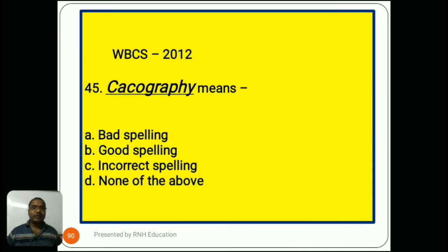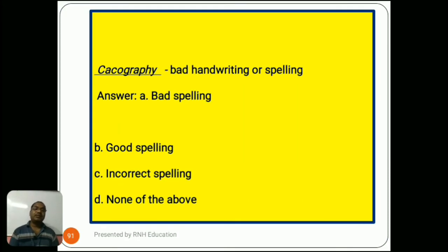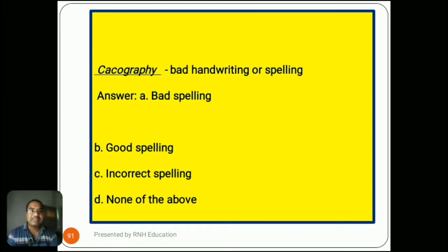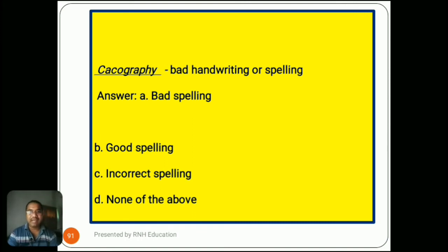Question number 45, from 2012: 'Cacography means...' Options are A) bad spelling, B) good spelling, C) incorrect spelling, D) none of the above. Cacography means bad handwriting or spelling. The answer is A) bad spelling. Option B is good spelling, Option C is incorrect spelling, and Option D is none of the above.